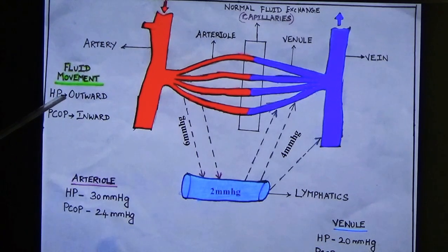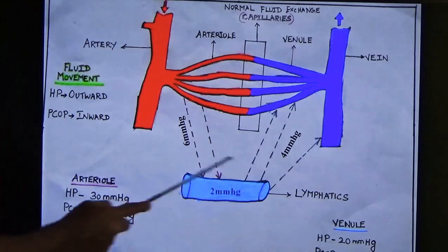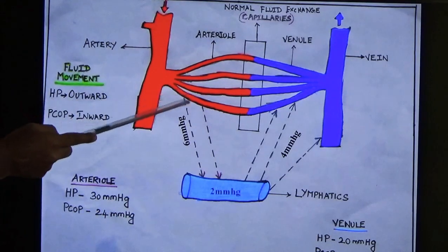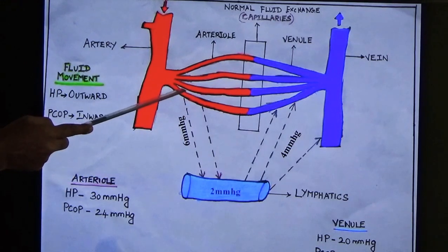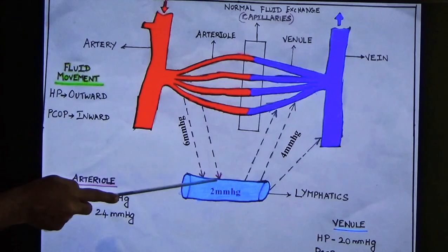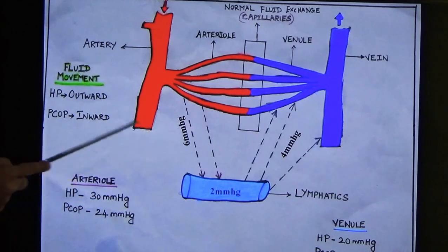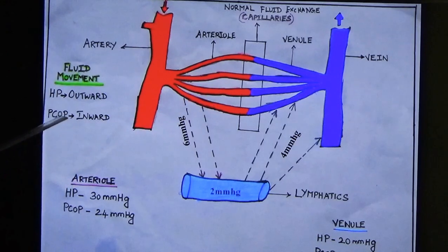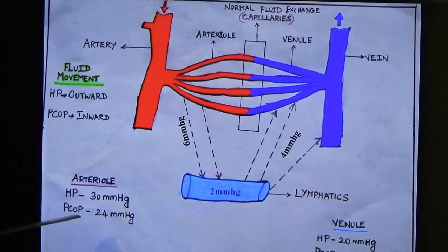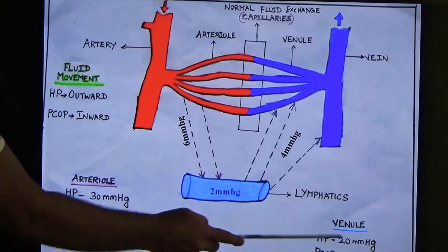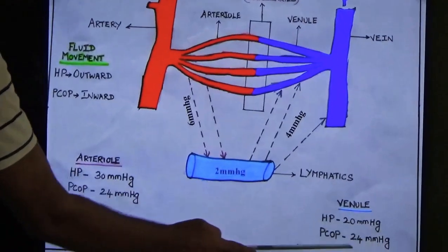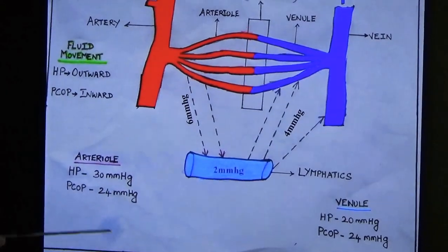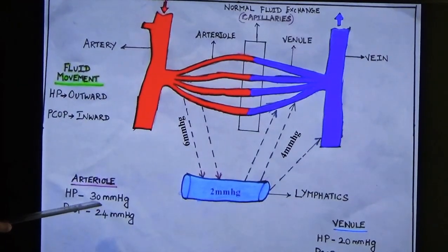Hydrostatic pressure drives outward motion — fluid moves from arterioles to outside. PCOP drives inward motion — fluid moves from interstitial fluid back into blood vessels. At the arterial end, HP is 30 mmHg and PCOP is 24 mmHg. At the venule end, HP is 20 mmHg and PCOP is 24 mmHg.